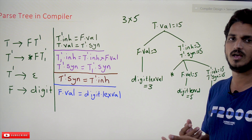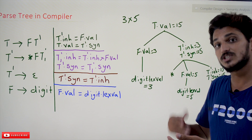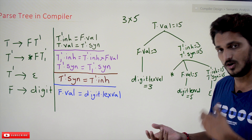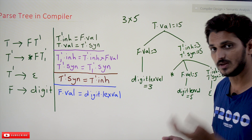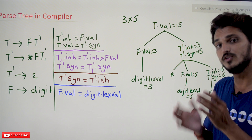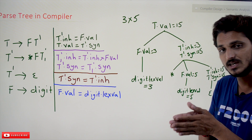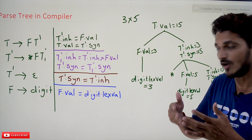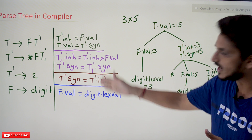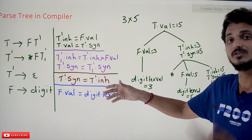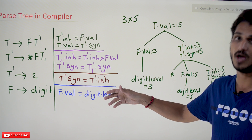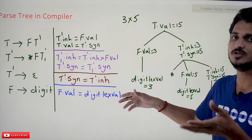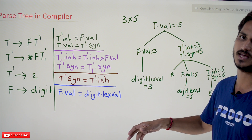How these values are evaluated and in which sequence — that we are going to show using a dependency graph. In our next class we will discuss about dependency graph, and using the dependency graph we will understand how values are evaluated and in which sequence. That point you will understand using the dependency graph.